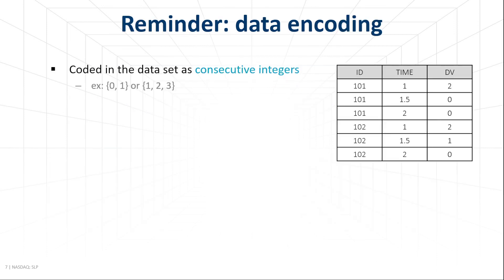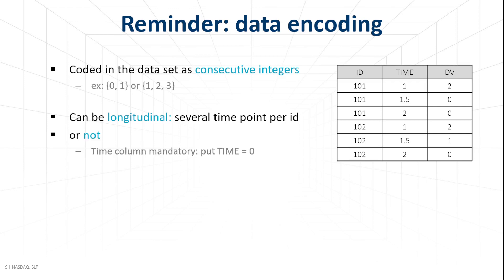Let's start with a short reminder of how categorical data are encoded in Monolix. The categories in the observation column must be consecutive integers — for example, 0 and 1 for binary, or 1 to 3. It is possible to have longitudinal categorical data with several time points per ID, but if there is only one value, we need to add a single time point for each ID, for example at 0.